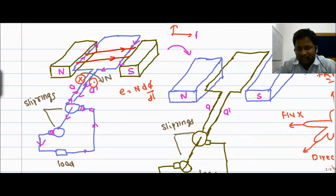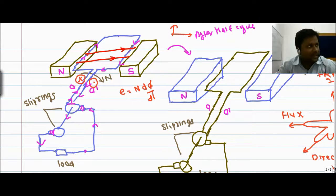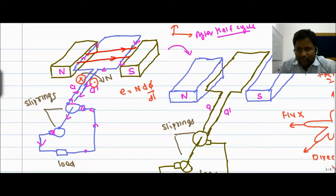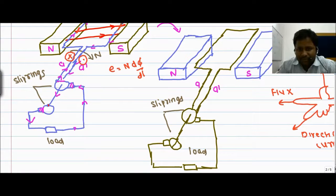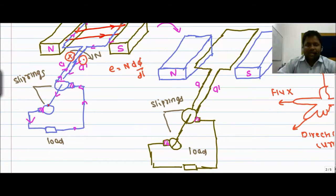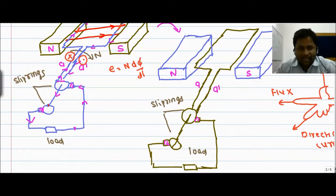Now, after half a cycle — what do we mean by after half cycle? After half cycle, the position of the brushes is fixed, there is no change in the position of the brushes, and the distances are fixed at these positions. But the change is only in the direction of the coil.